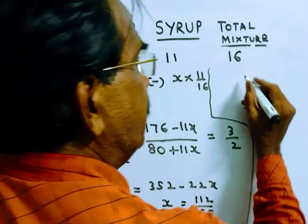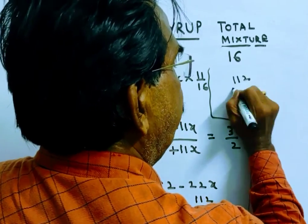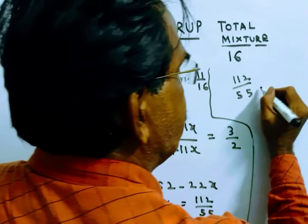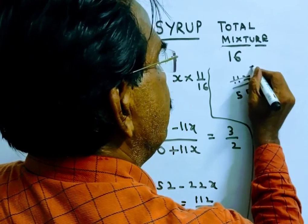Total mixture, 112 by 55 is what part of 16? By 16, which gives 7 by 55.